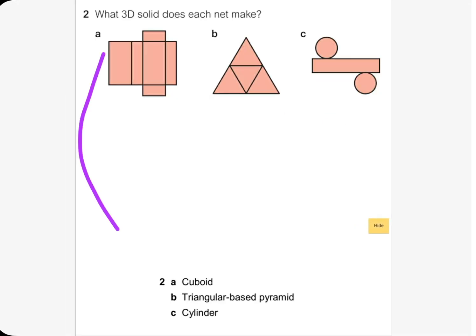So A will be a cuboid, B will be a triangular based pyramid, and the last one will be a cylinder. These are the answers for that question. You have to focus on the names and the nets and what 3D solids do they make.